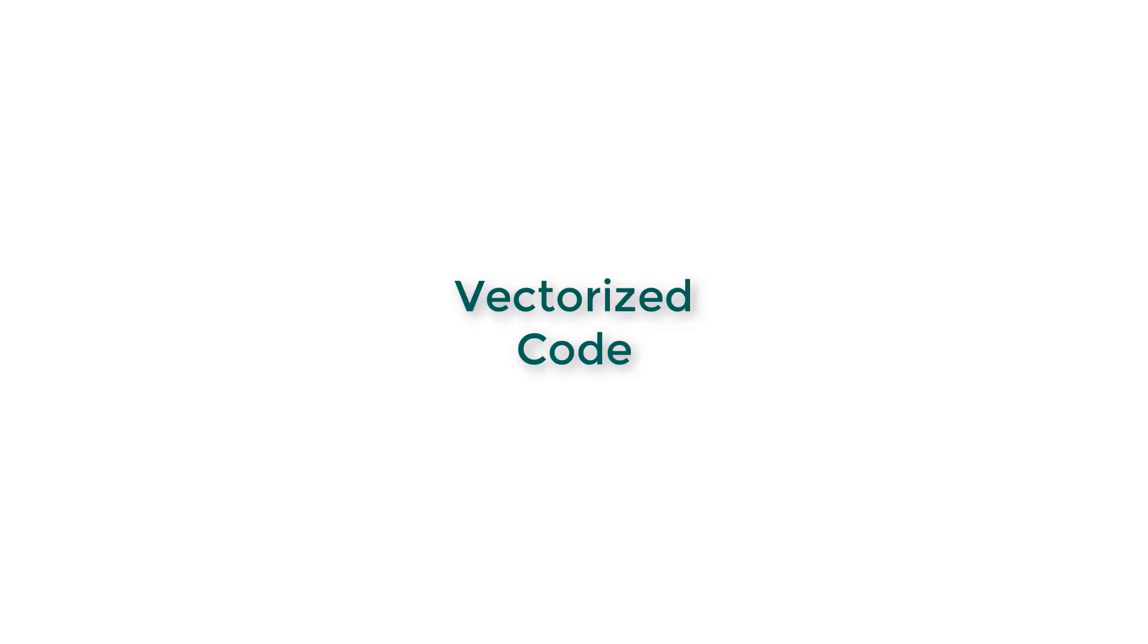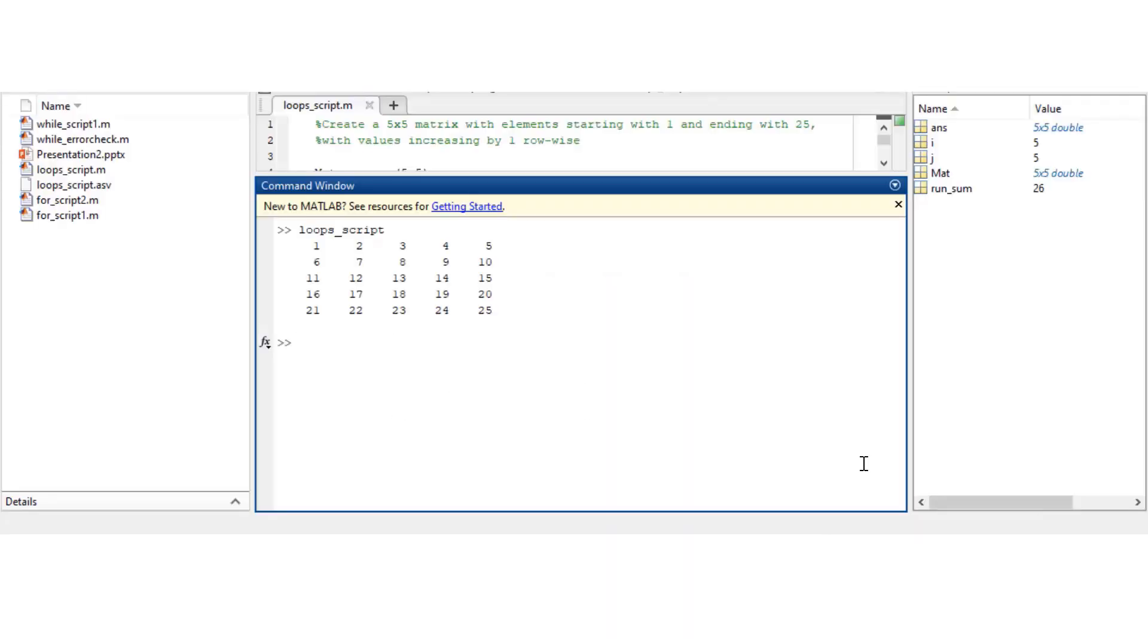We could use vectorized code. The vectorized code implementation for this task is reshape 1 colon 25 and 5 by 5 with the transpose. That will create exactly the same matrix that we started out with.